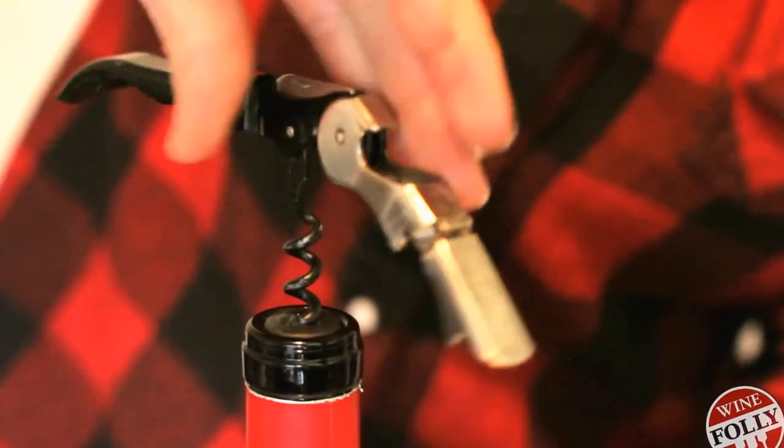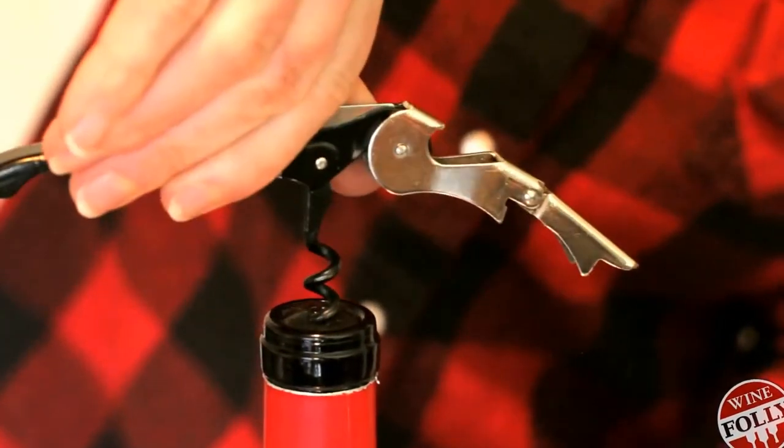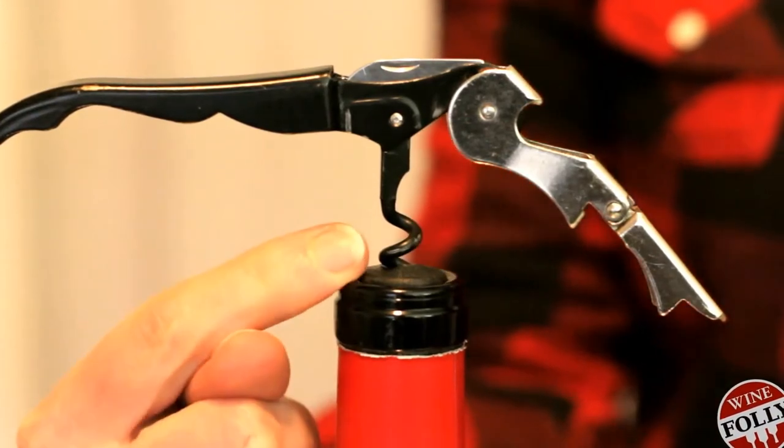You'll rotate the waiter's friend six half turns. The screw will have just one curl left if you've done it right.